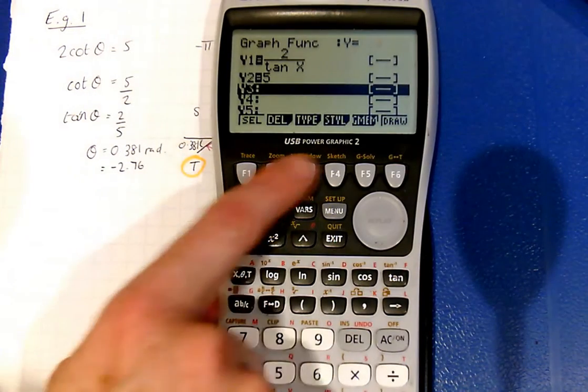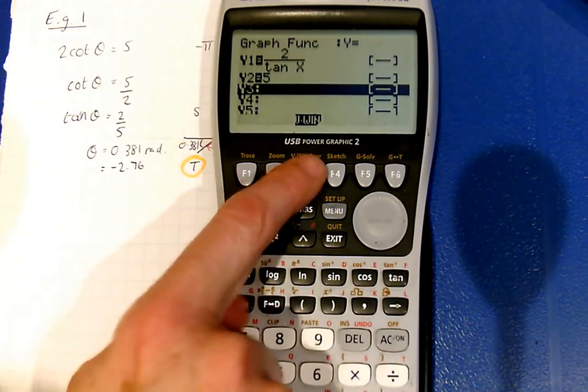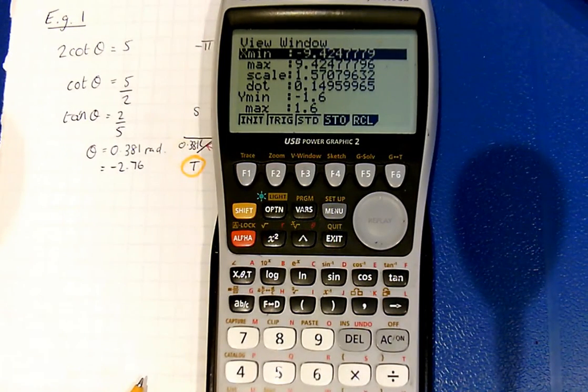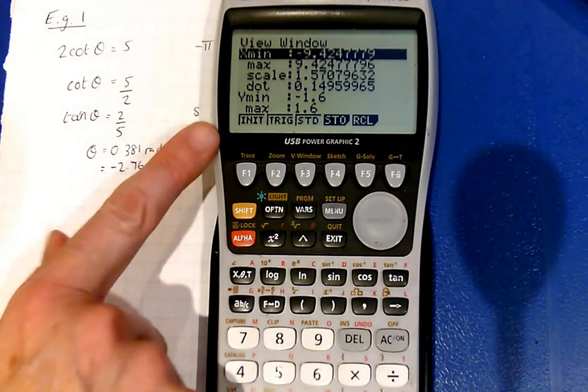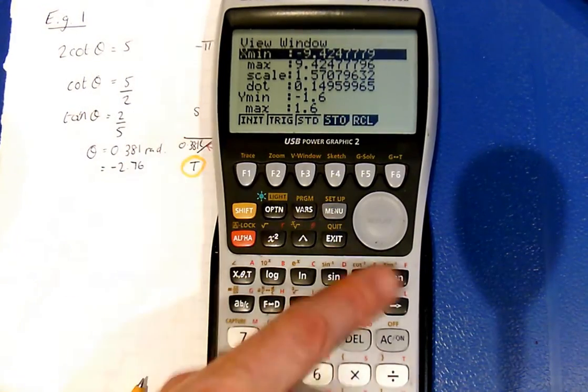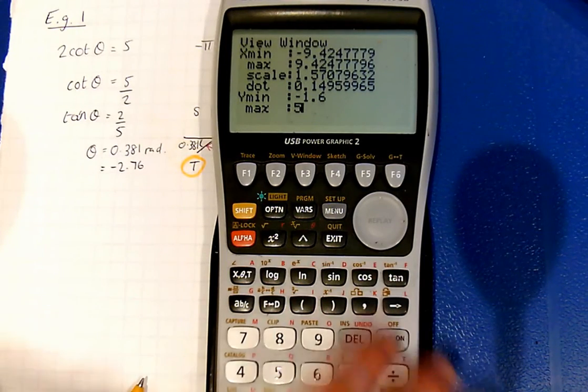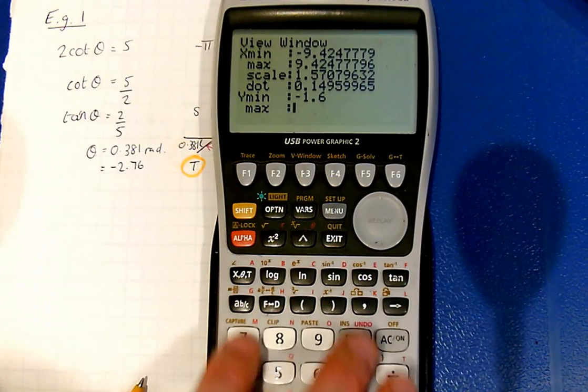So I'm going to go to my view window at the moment to make sure that I'm in a trig format. And that should hopefully be okay. I know my y's have to go past 5. So I'm going to change my y maximum instead of being 5. Let's have, I don't know, 7.